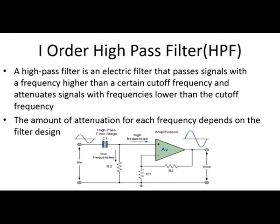The first order high pass filter is an electric filter that passes the signals with frequency higher than a certain cutoff frequency and attenuates signals with frequencies lower than the cutoff frequency. The cutoff frequency is represented as the lower cutoff frequency. The amount of attenuation for each frequency depends on the filter design.